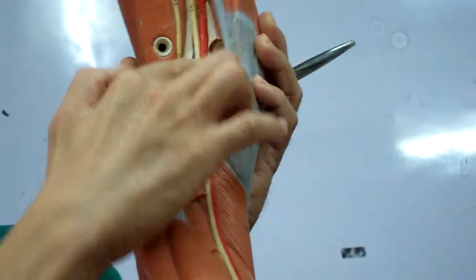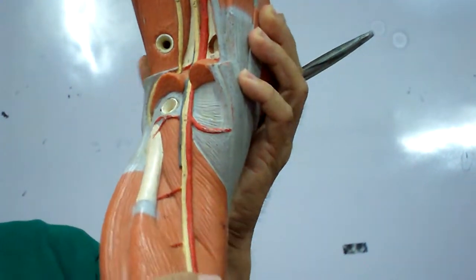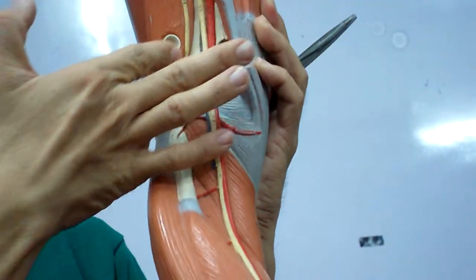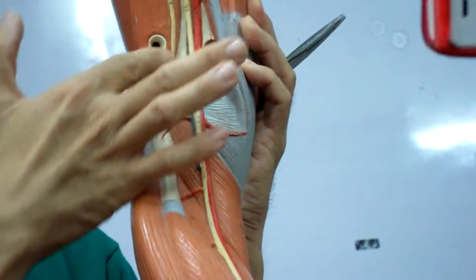You have your tibial nerve, and the other one that goes lateral, you have your common peroneal nerve.